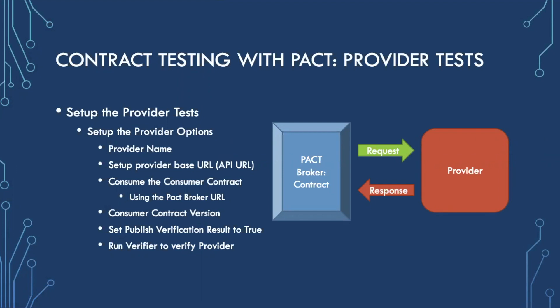Moving on to provider tests — the other half of contract testing is the provider side, which is the client API side. It's very similar to how the consumer tests are set up but much simpler. We don't have to run a mock or mock the consumer. We're going to utilize the contract generated by the consumer as our consumer sending the request. The things we need to set up inside the provider options are: provider name, provider base URL, and then we need to target the PACT broker URL and target the specific consumer contract that was generated during the consumer test.